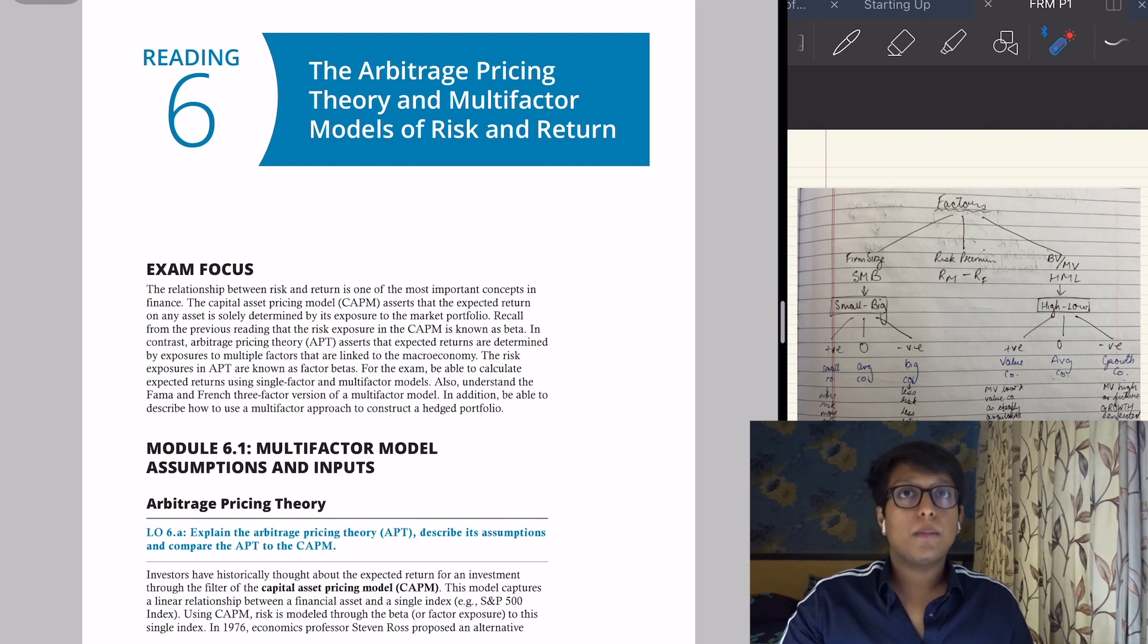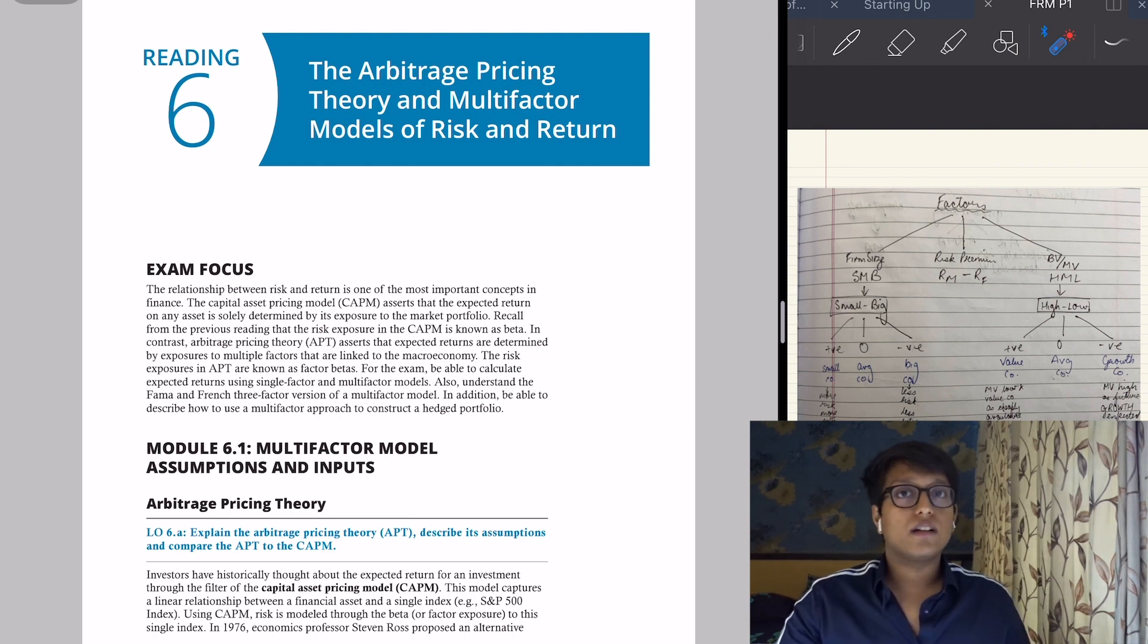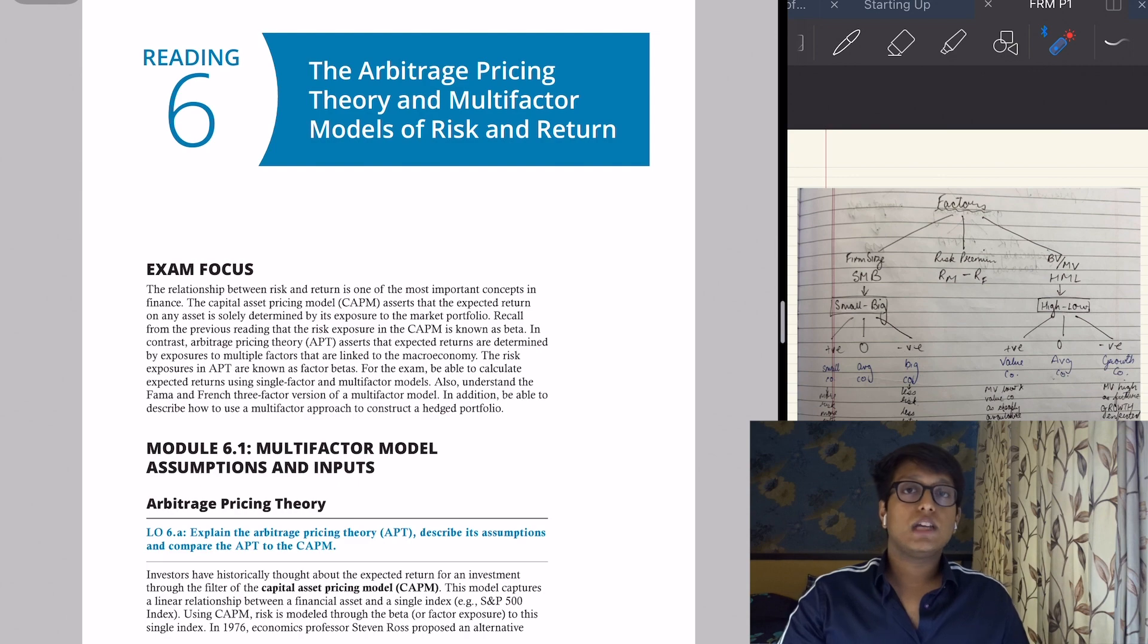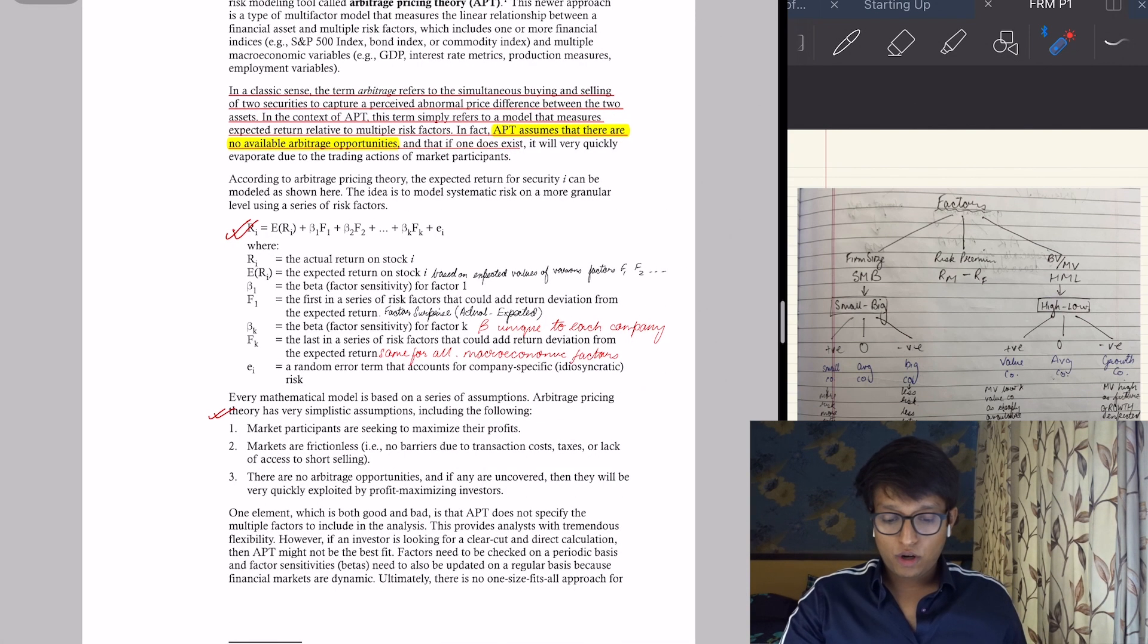Okay, so let's move to the sixth reading: Arbitrage Pricing Theory and Multi-Factor Risk Models of Risk and Return. It's fairly simple. There are some complicated terms, but I'll simplify it down. Let's keep marking whatever I mark and keep underlining—it'll become simple. So in 1976, Professor Stephen Ross developed an alternative to the Capital Asset Pricing Model called the Arbitrage Pricing Theory.